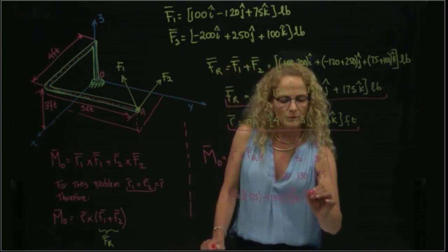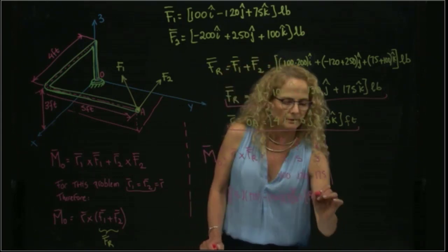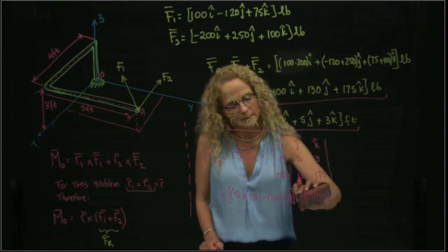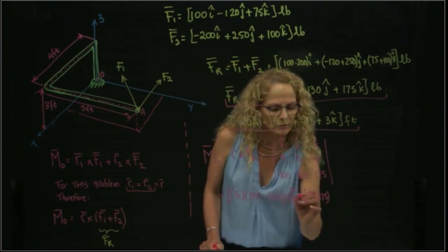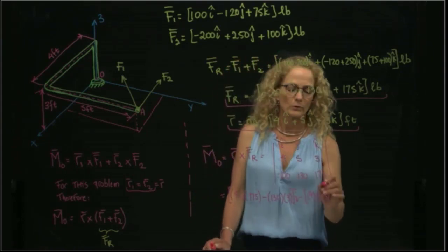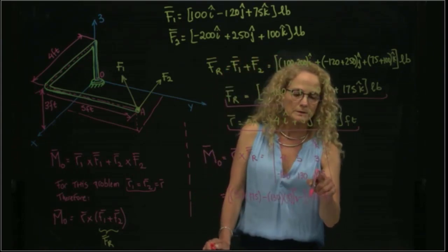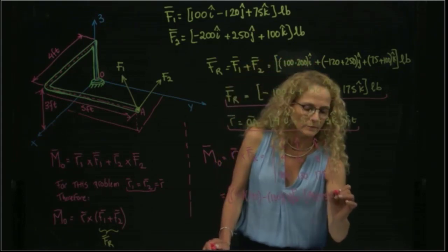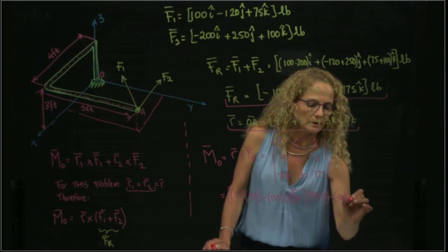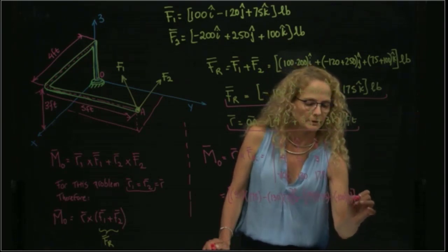Then in J, I have 4 times 175, and remember that the J is negative. We have I positive, J negative, and K positive. So 4 times 175 minus minus 100 times 3, and that will be J.